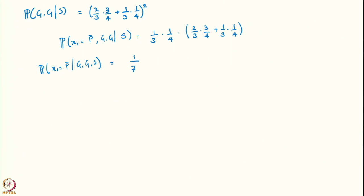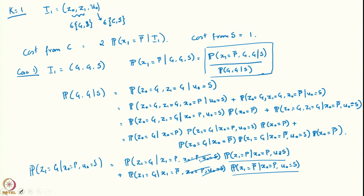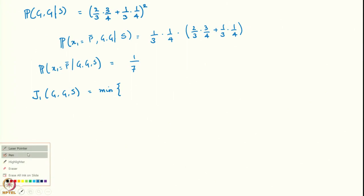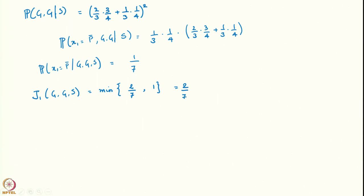As a result, we can now go back and ask what is j1(GGS). j1(GGS) was the minimum of the cost from action C and the cost from action S. The cost from S was 1, and the cost from C is 2 times the probability of x1 equal to p-bar given I1. We have computed this probability to be 1/7, so 2 times 1/7 is 2/7. Since 2/7 is less than 1, this becomes 2/7, and the optimal action at time 1 when you have information GGS is to continue — that means keep running the machine.